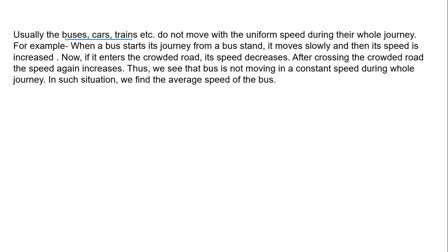Usually when we consider any moving object like a bus, car, or train, they do not move with uniform speed during the whole journey. For example, consider a bus: it starts its journey from a bus stand, so first it moves slowly, then the speed increases. If it enters a crowded road, the speed decreases again, and when it crosses the crowded road the speed increases again. During the entire journey the speed is increasing and decreasing, so it is not constant.